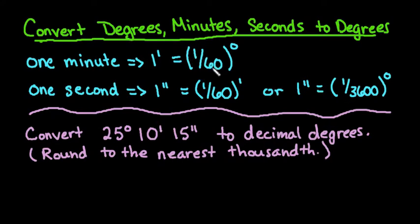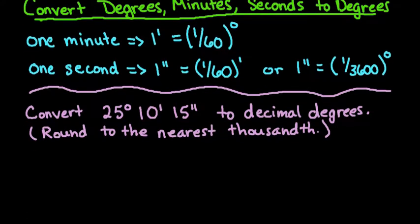So 1/60th times 1/60th would give you 1 over 3600. So that's where that conversion came from, it's just a shortcut.